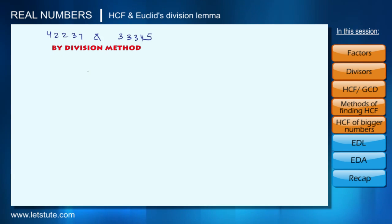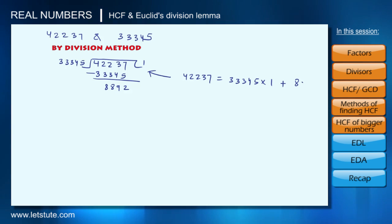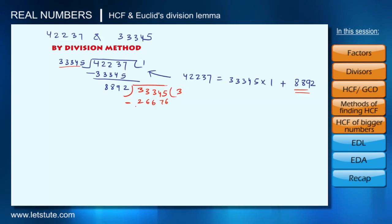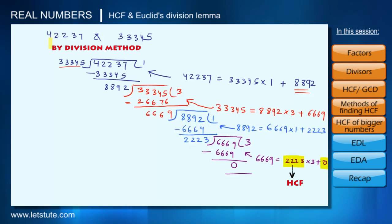Let's apply the division method to 422,237 and 33,345. Dividing gives: 422,237 = 33,345×1 + 88,892. Since remainder is not 0, we continue — taking the remainder as the new divisor and the old divisor as the new dividend. We keep applying this until remainder equals 0. When we finally reach remainder 0, the divisor at that stage, 2,223, is the HCF of 422,237 and 33,345.